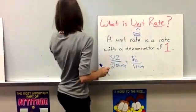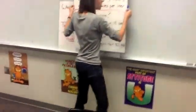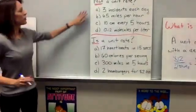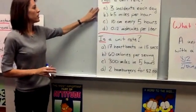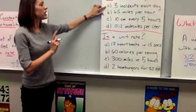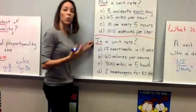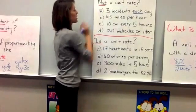Okay, so now let's do some questions figuring out what is a unit rate and what is not a unit rate. Okay, this first question says, which of these is not a unit rate? Okay, A says three incidents each day. The word each means one, so it's talking about per one day. So this one is a unit rate, so it's not that one.